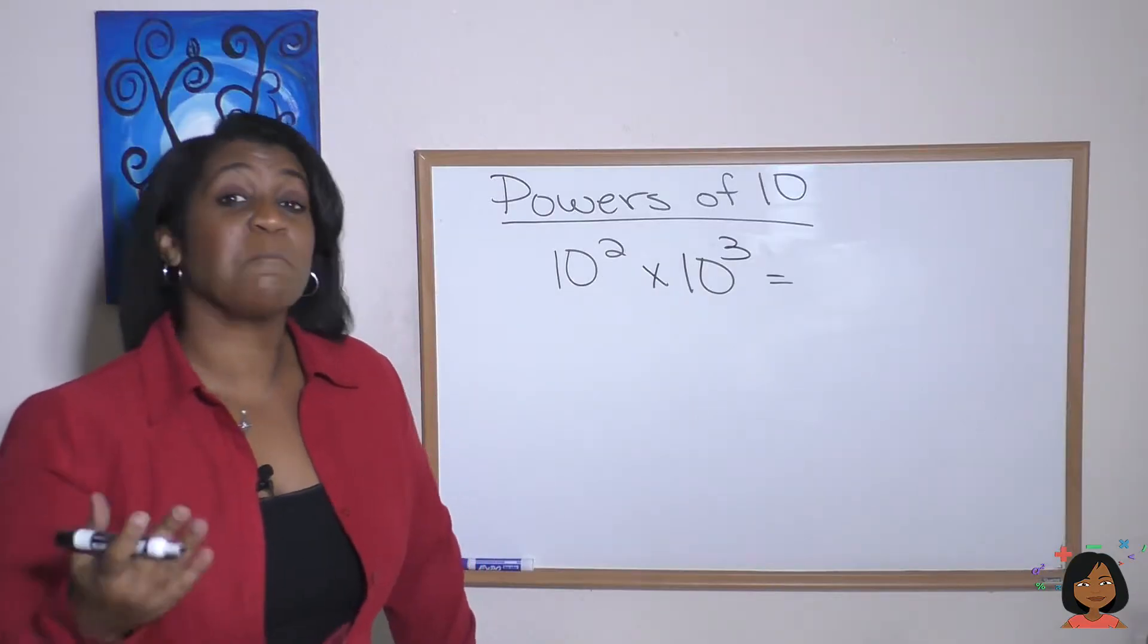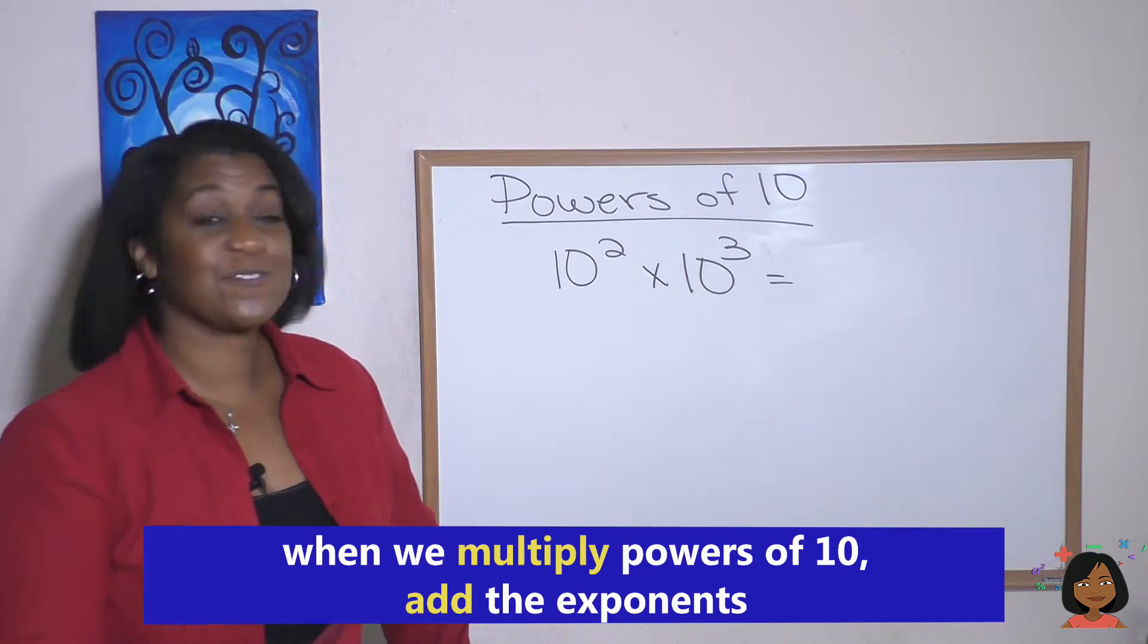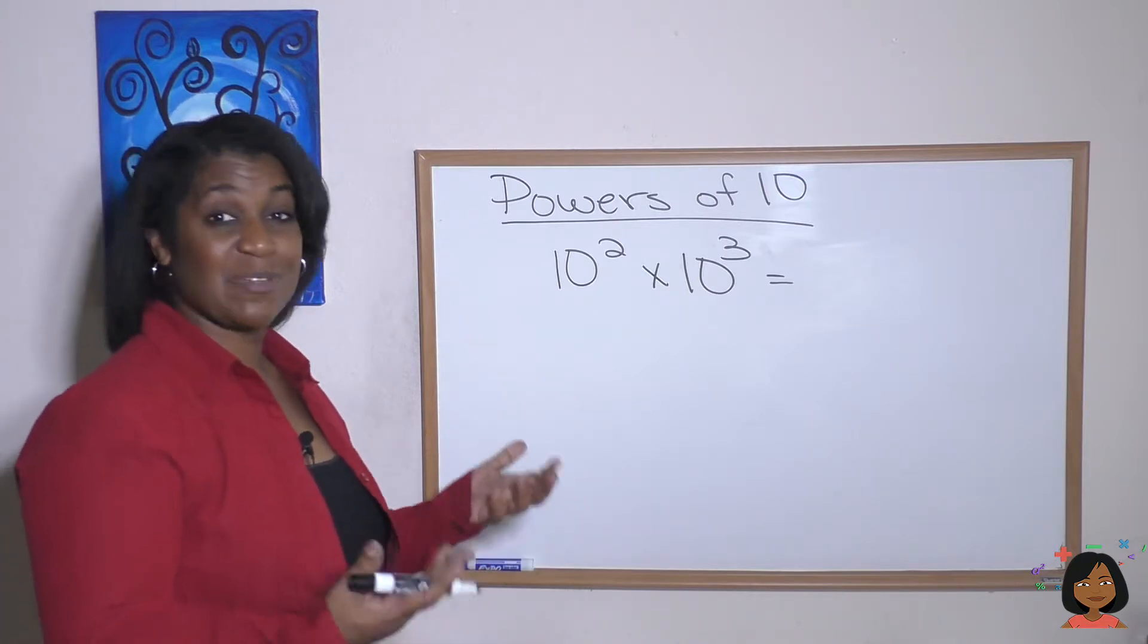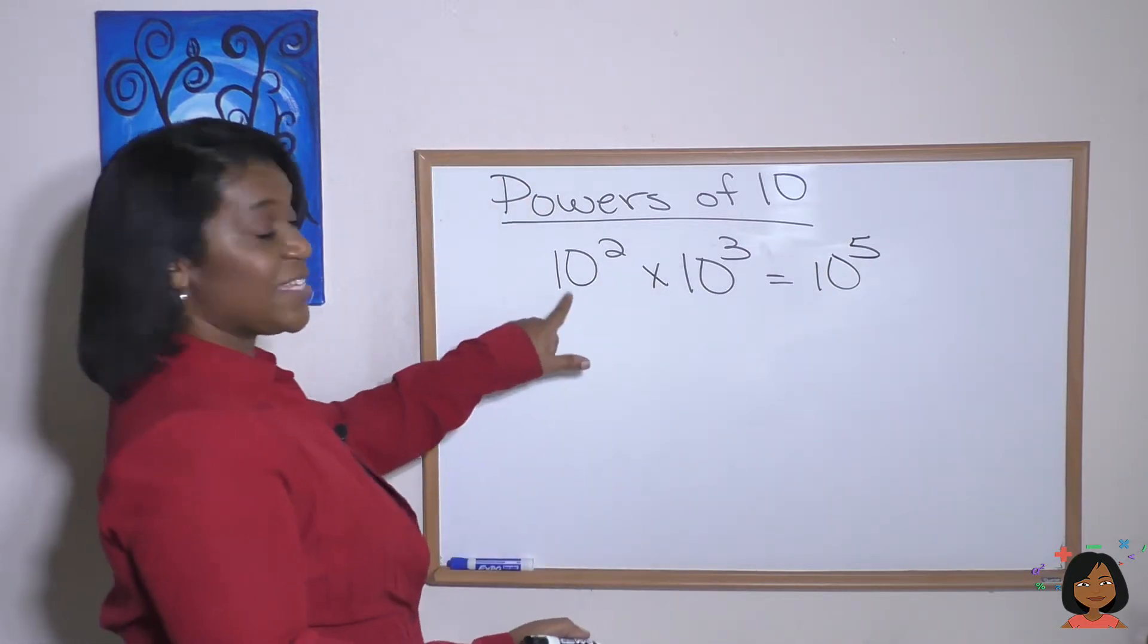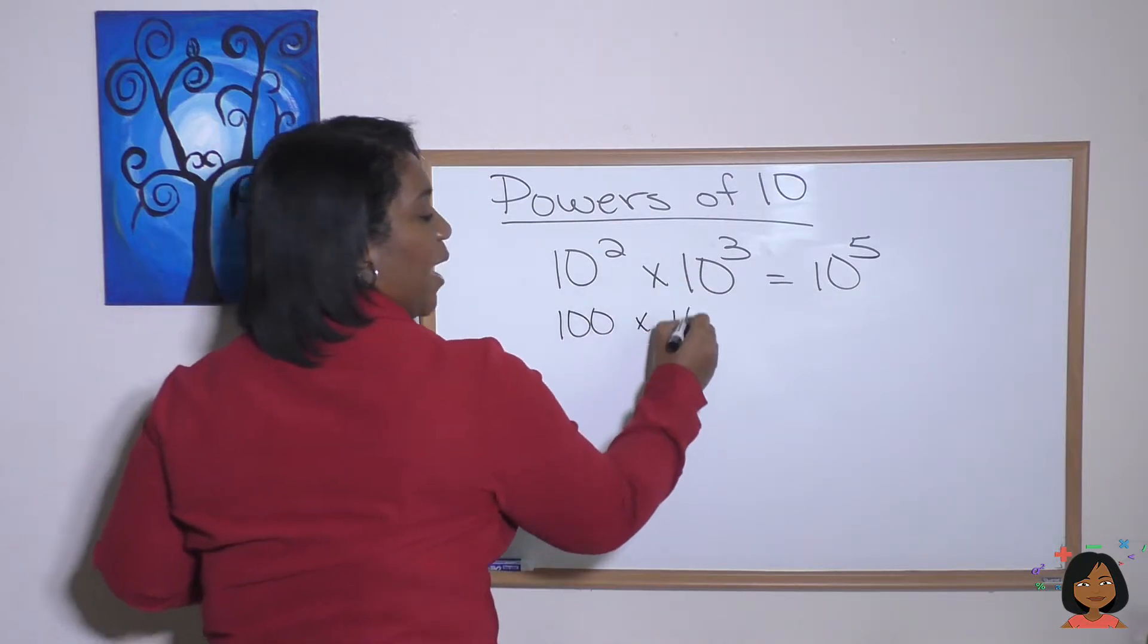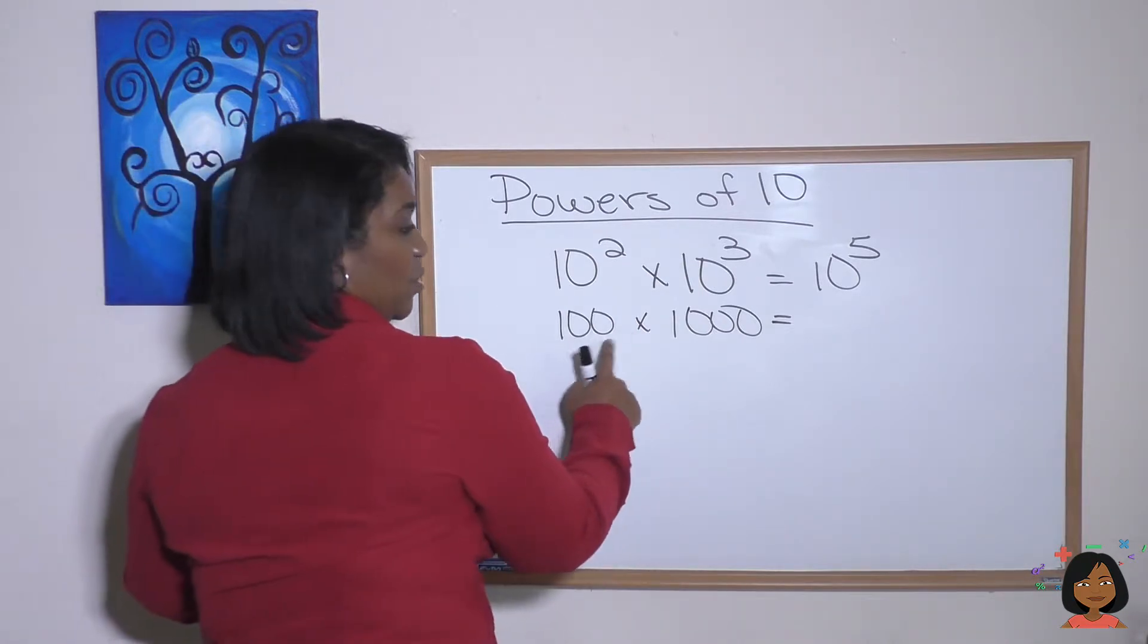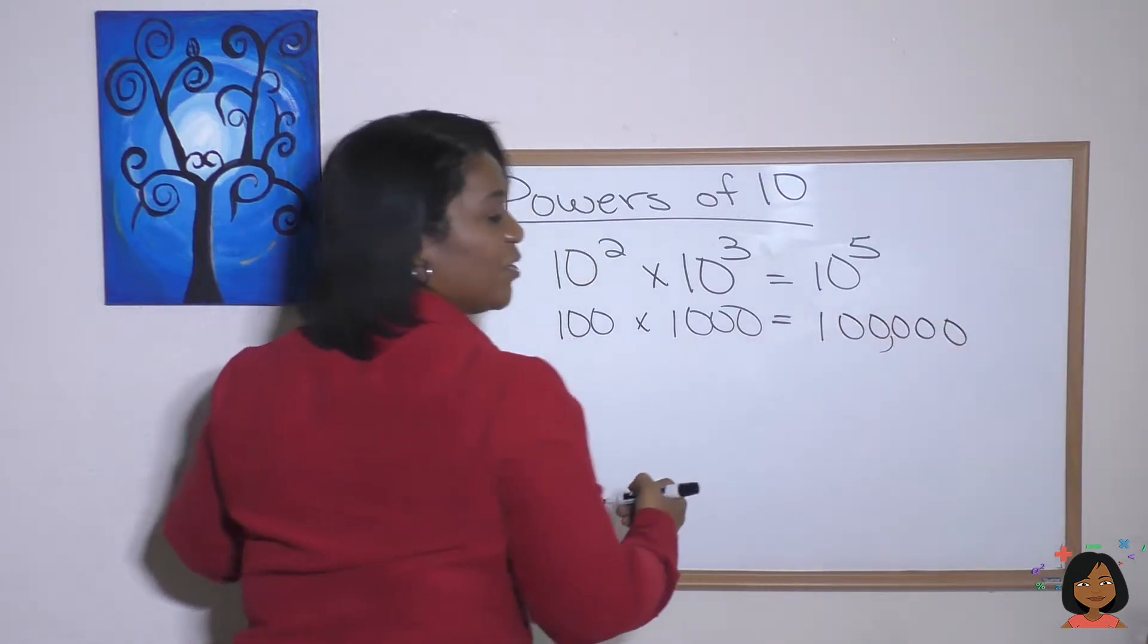Here's a rule for multiplying powers of 10: when we multiply powers of 10, we only have to add the exponents together. So 10 to the second power times 10 to the third power is going to be 10 to the fifth power. Let's show you how that works. 10 to the second power has two zeros, which is 100, and 10 to the third power has three zeros. So 100 times 1,000, just count up the zeros: one, two, three, four, five. That's 100,000, which is the same as 10 to the fifth.